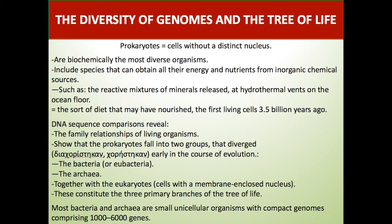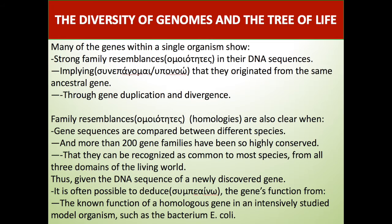Most bacteria and archaea are small unicellular organisms with compact genomes comprising 1,000 to 6,000 genes. Many genes within a single organism show strong family resemblances in their DNA sequence, implying that they originated from the same ancestral gene through gene duplication and divergence.